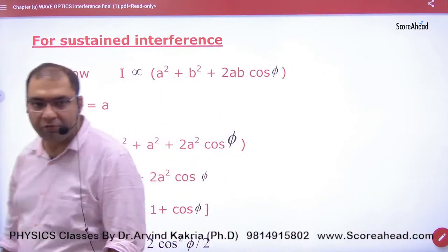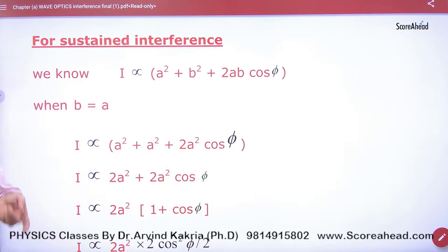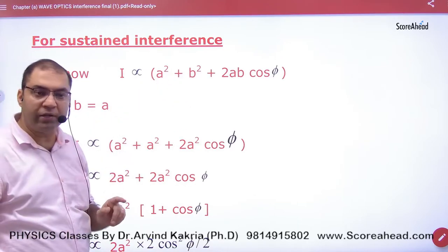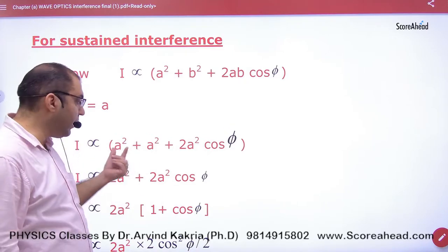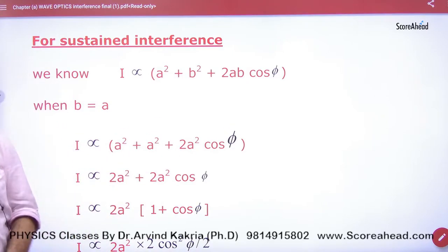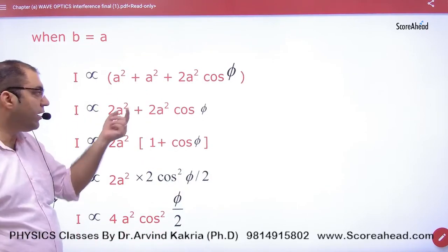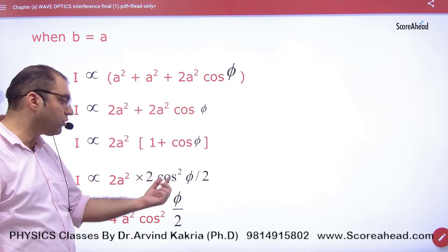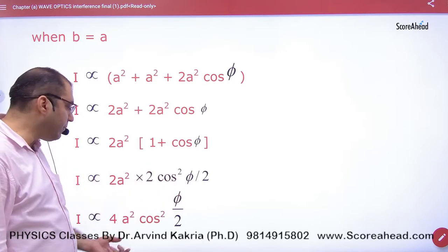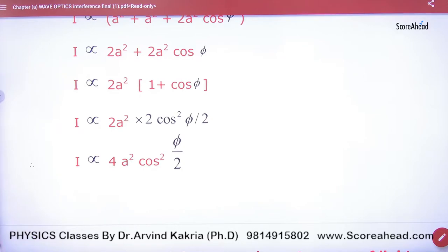For sustained interference, what is the value of a and b? It is equal everywhere — the amplitude is the same at every place, so the amplitude terms can cancel out. So what will this be? 2a² is common: 2a²(1 + cosφ). Using the identity, 1 + cosφ = 2cos²(φ/2), so this becomes 4a²·cos²(φ/2).